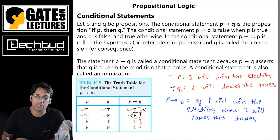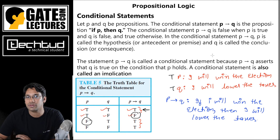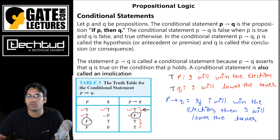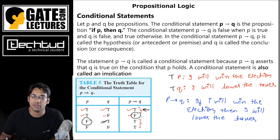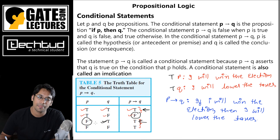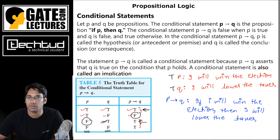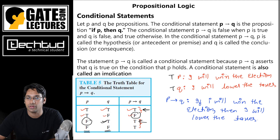To elaborate with an example: if p is false (I did not win the election), someone like Rahul Gandhi may still lower taxes due to political influence — so q could be true even though p is false, giving a true result. Alternatively, if he did not win and did not lower taxes, we still cannot hold him accountable to that promise. So when p is false, p → q is true regardless of q.